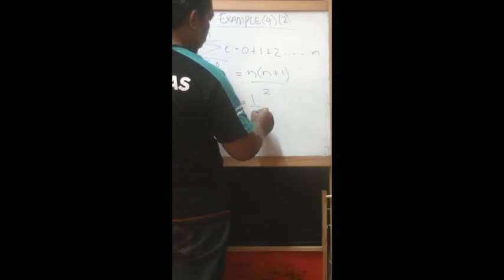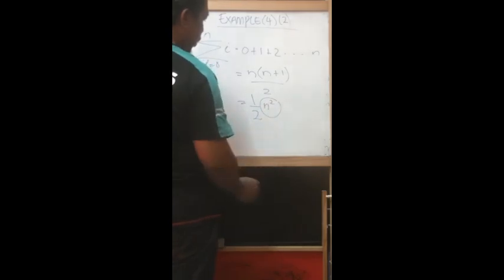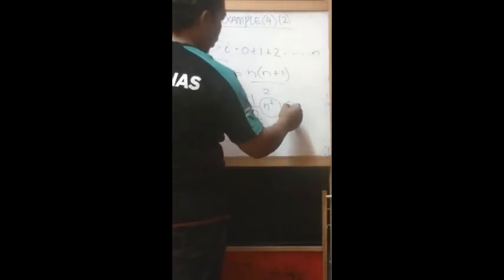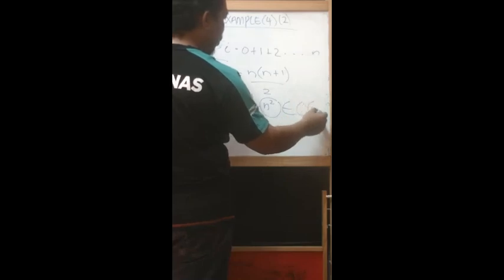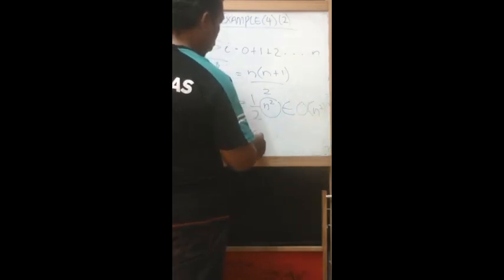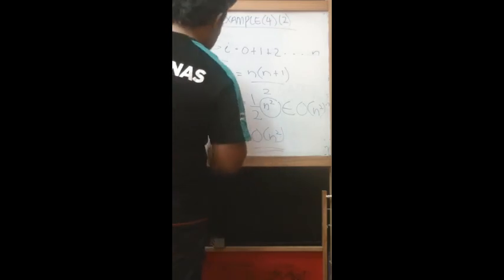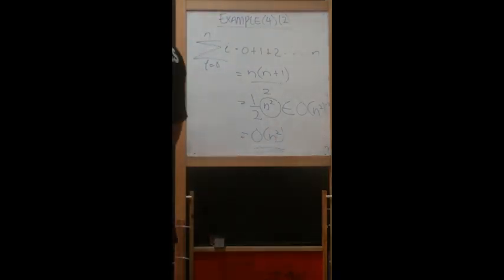This equals half n squared. From here we can determine the time complexity is O(n²), or simply O(n²). This is the answer for example 4.2.